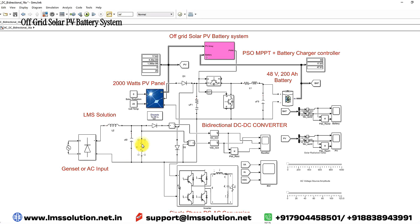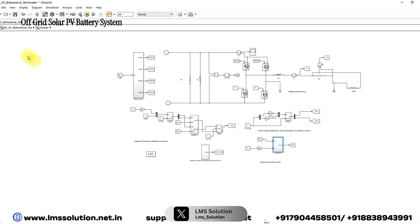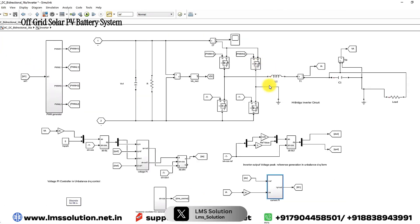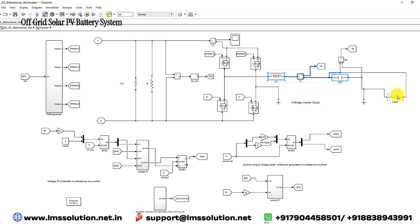After rectification, it will be filtered by using an LC filter, then connected to the bi-directional converter and also to the single-phase inverter. After filtering, it will drive the AC load.